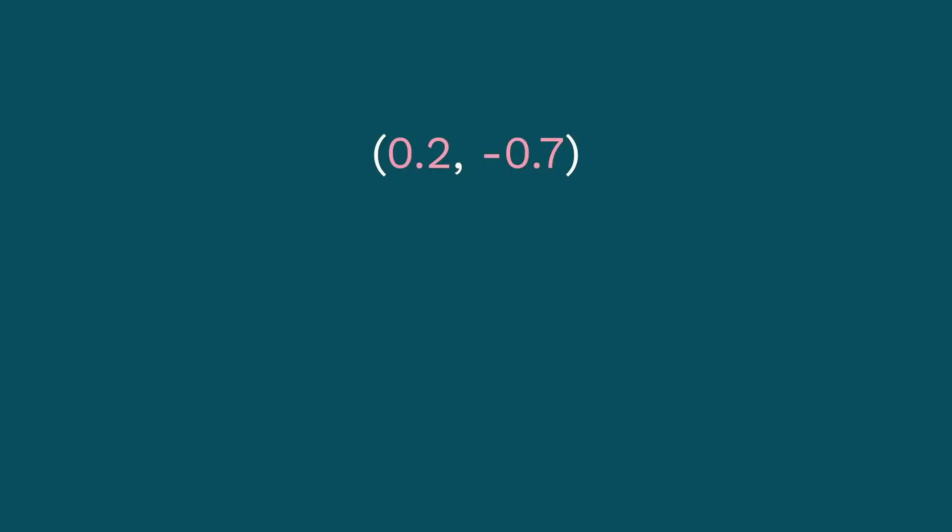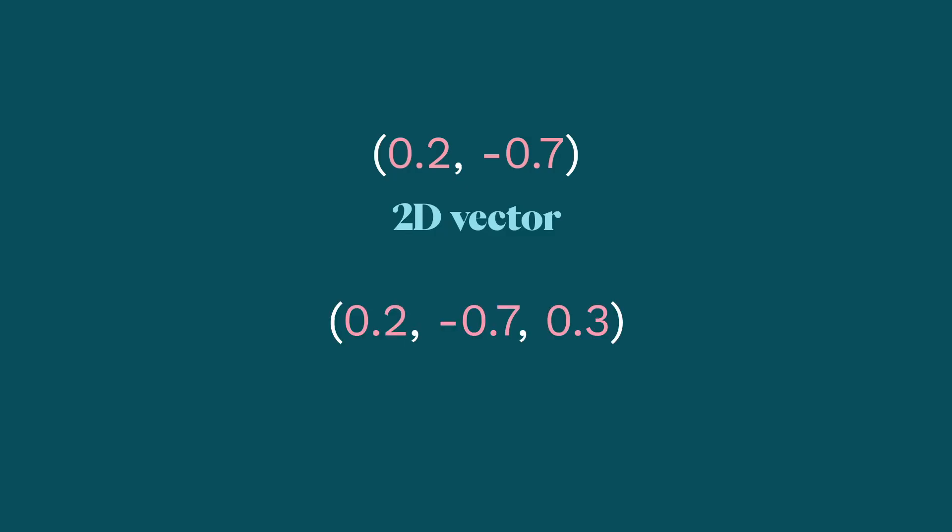We're going to start with the term embedding. An embedding is just a vector that represents something. What is a vector? It's just an array of numbers. If you think of an XY coordinate, that's a two-dimensional vector. An XYZ coordinate, that's a three-dimensional vector. And there's no limit to how many dimensions you can have.